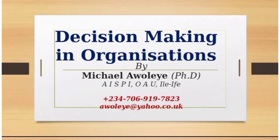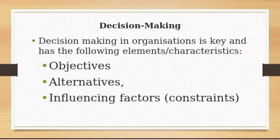Decision making in an organization is key and it has the following key elements. Number one is objectives. You need to be able to set your objectives: what do we intend to achieve, where are we going, what do we have to do, what is our goal? The objectives are the set of lines highlighted to achieve your goals.